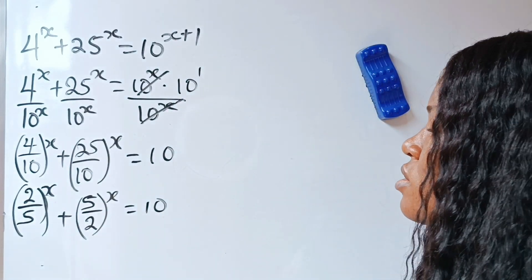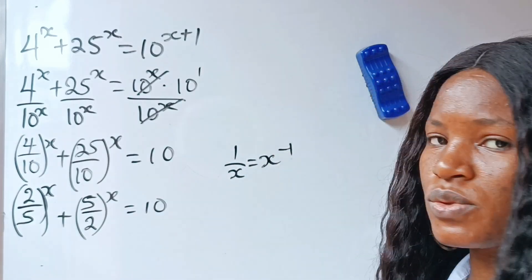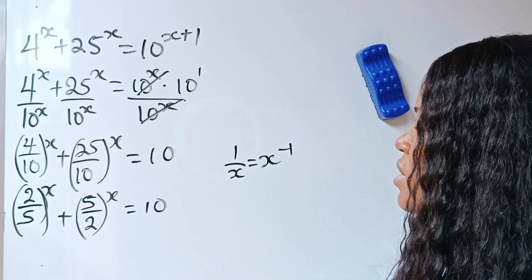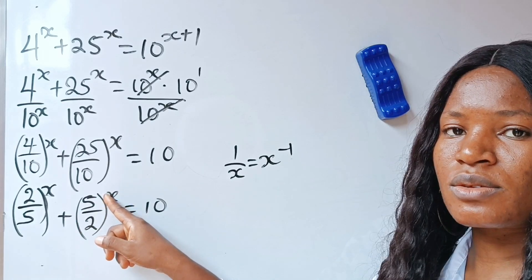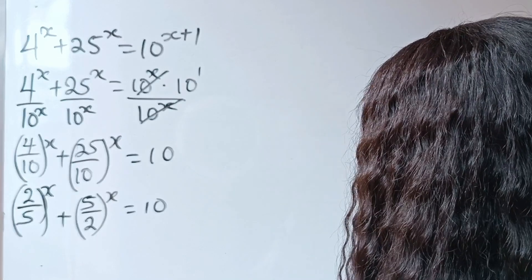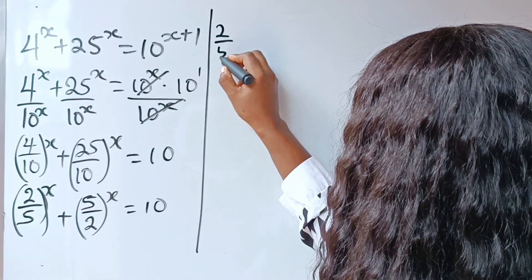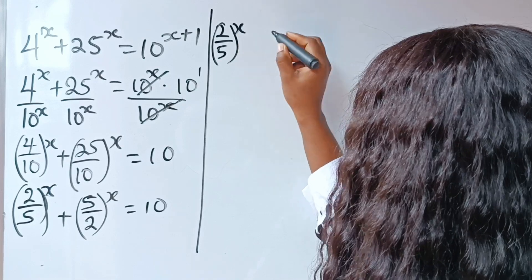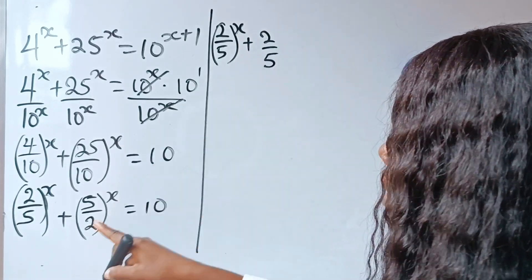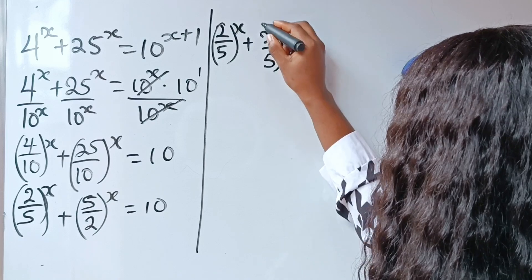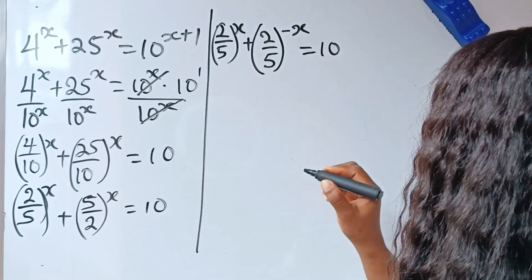Now I want us to recall that 1 over x is equal to x to the power of minus 1. So that simply means that if we take the inverse of this, we are going to introduce a minus sign. That is why we write 2 divided by 5 raised to the power of x, plus 2 divided by 5 — I've taken the inverse of 5 over 2 — so the power becomes minus x, is equal to 10.